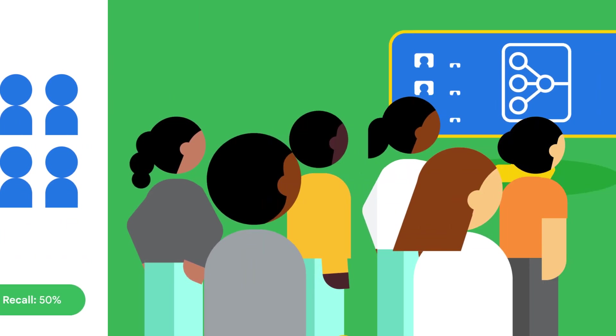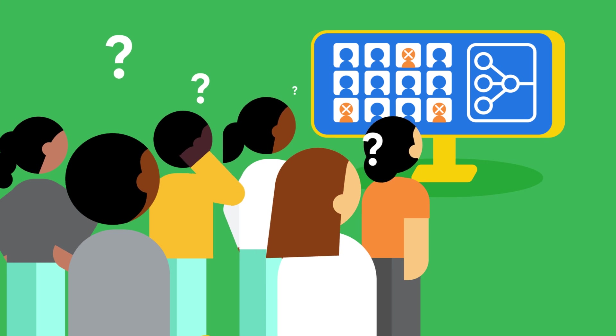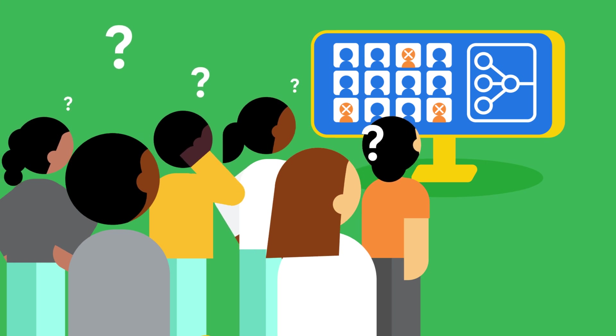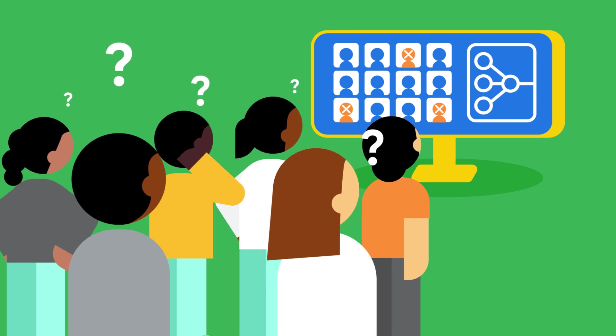The admissions committee was puzzled. These decisions were made by an algorithm — shouldn't they have been objective? How did this bias arise? Let's get started.